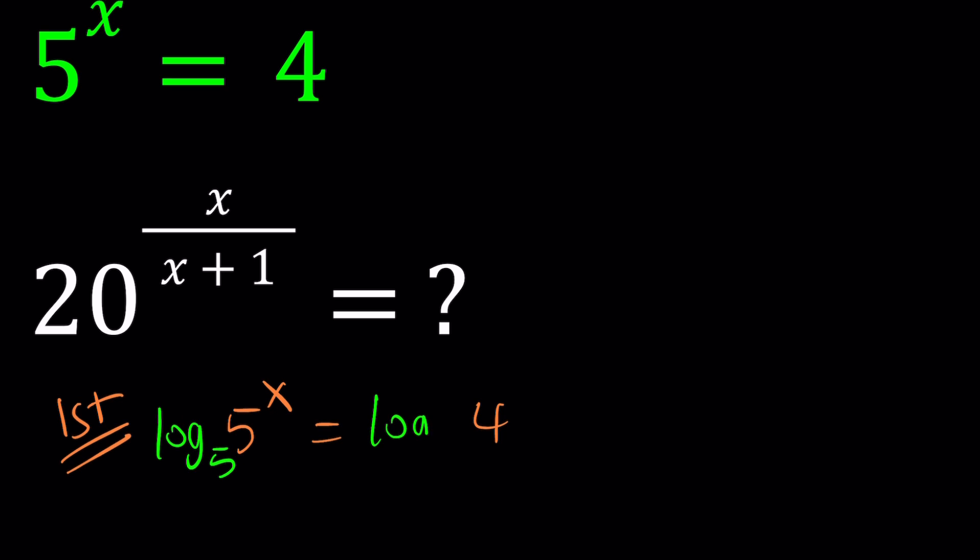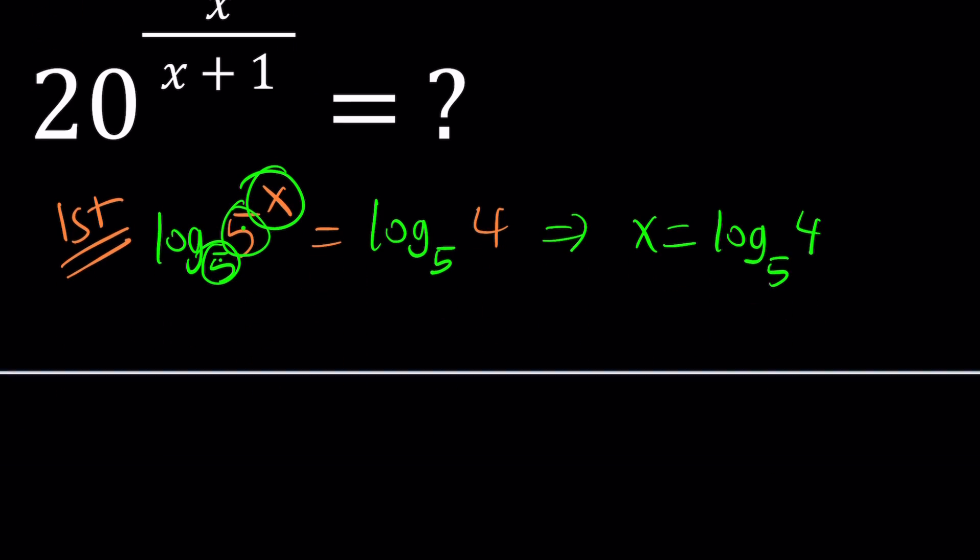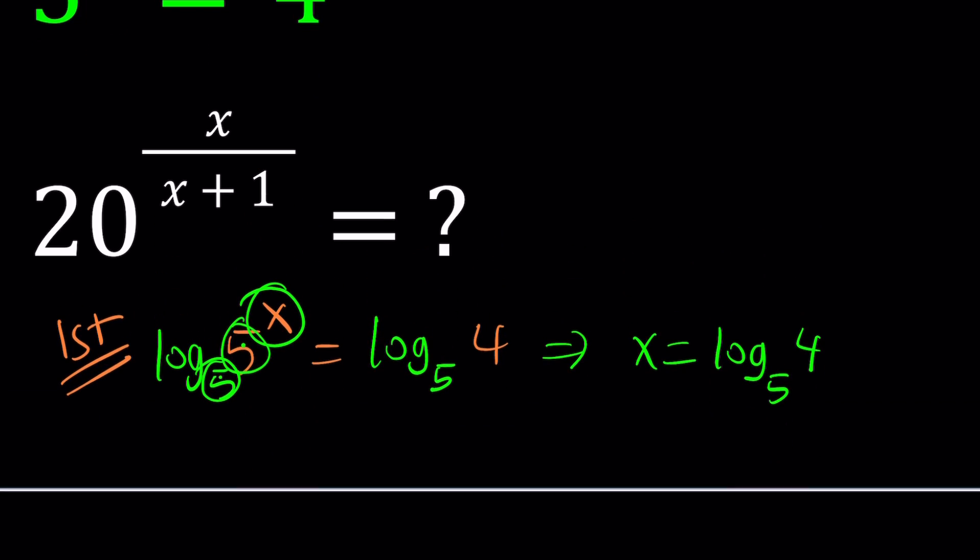If you log both sides with base 5, because these two are going to give us 1. Because log 5 with base 5 is always 1, this gives us x. So x can be written as log 4 with base 5. It's kind of like the other way around, but anyways, the way you read it. So now we can go ahead and replace x with that.